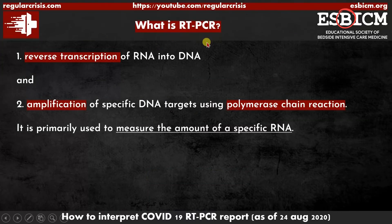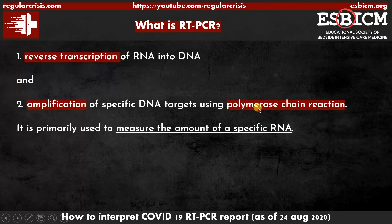So basically, what is RT-PCR? RT-PCR is the reverse transcription of RNA into DNA, and then amplification of these specific DNA targets by using polymerase chain reaction. In simplified terms, it measures the amount of specific RNA in that particular sample.